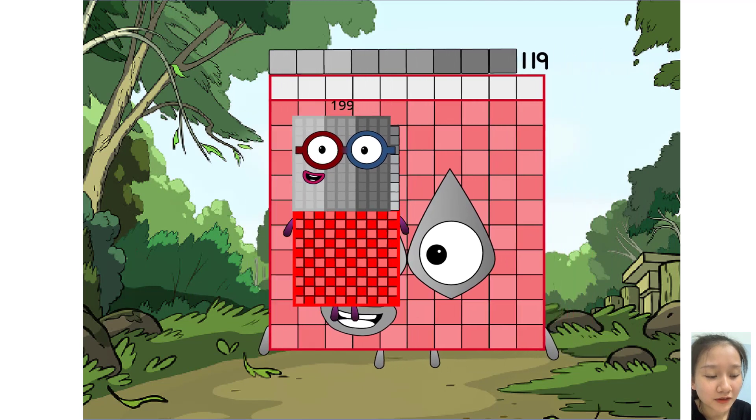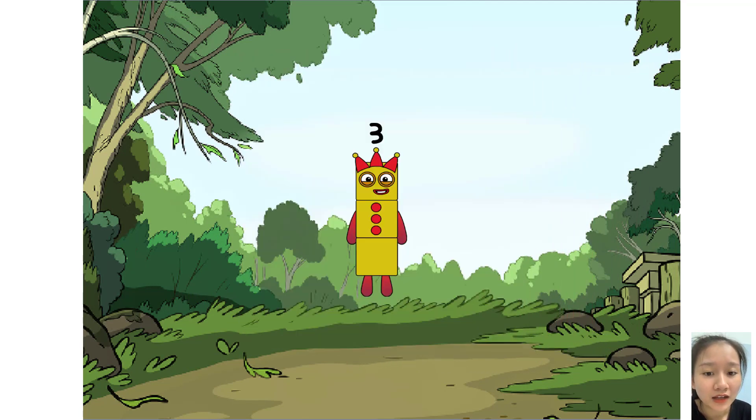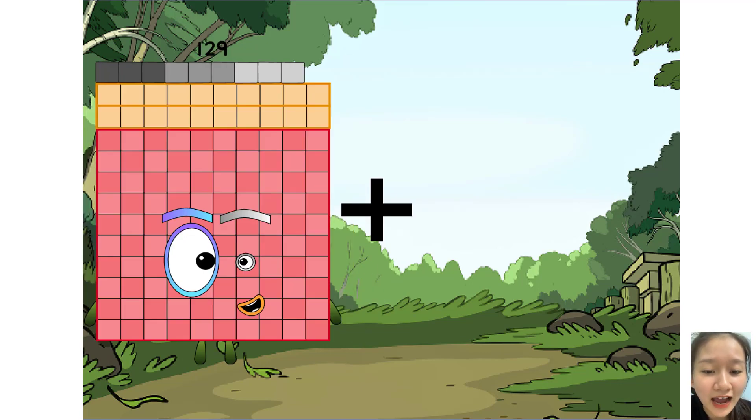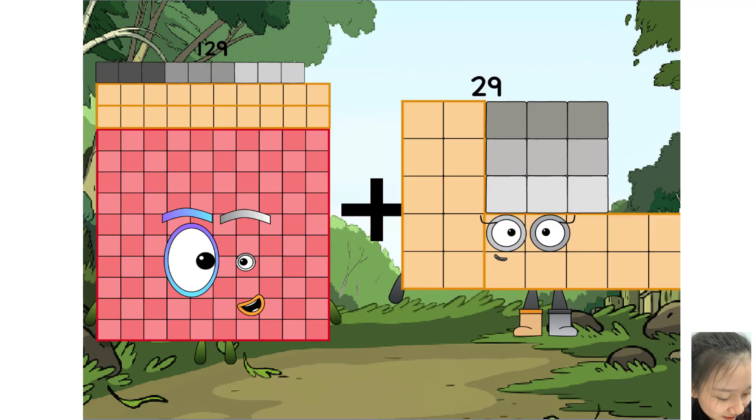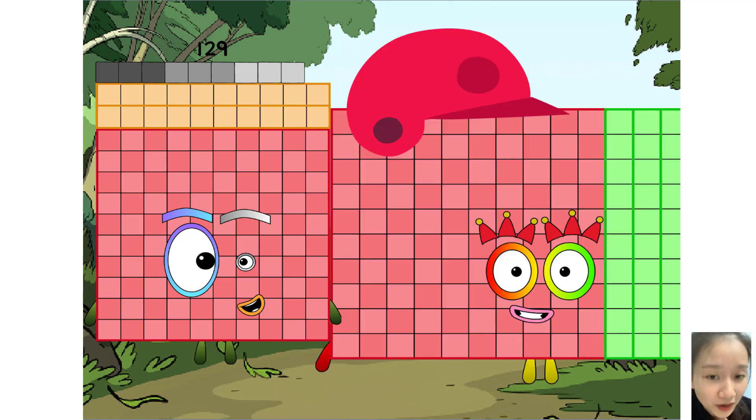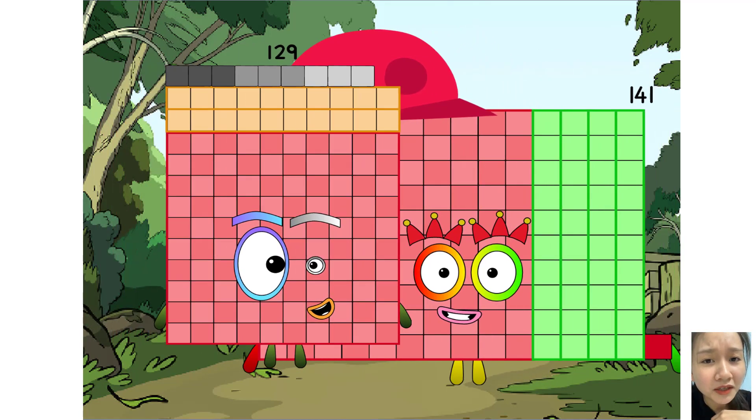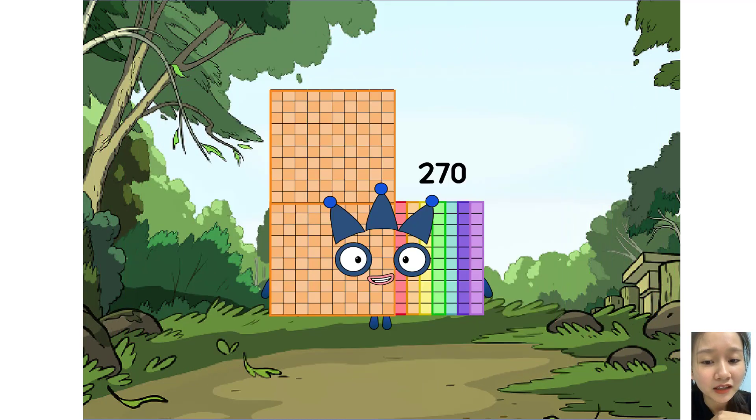Oh, next question. 119 equals 3.0. Next question. 129 plus 141 equals 270.